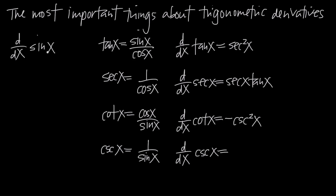Remember that there are six trigonometric functions: sine, cosine, tangent, cosecant, secant, and cotangent. Sine and cosine are the trigonometric functions you'll run into most often. The derivative of sine of x is cosine of x — so the derivative of sine is cosine.